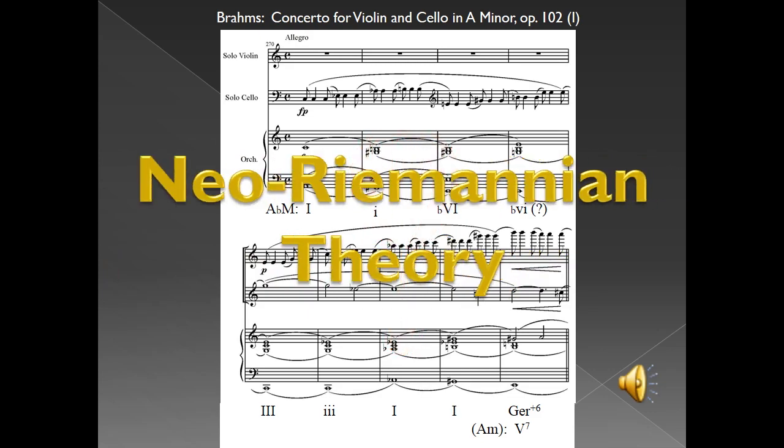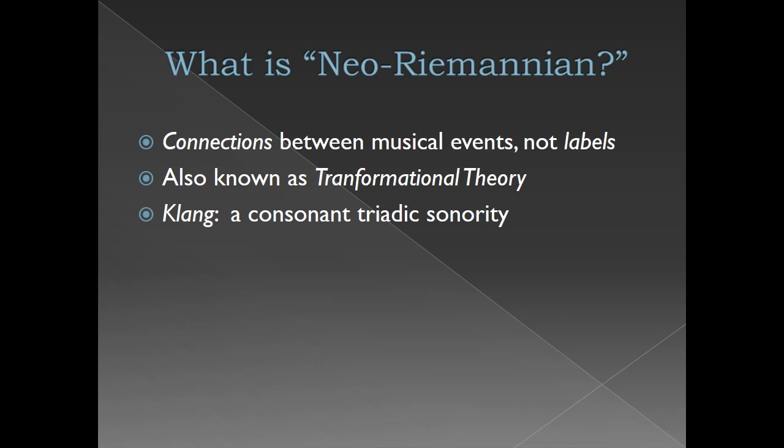So how does Neo-Riemannian theory work? Essentially it looks to study the connections and relationships between chords, cadences, or other musical events, rather than the labels or definitions for the events themselves. A Neo-Riemannian sees a transformation of one chord into another.